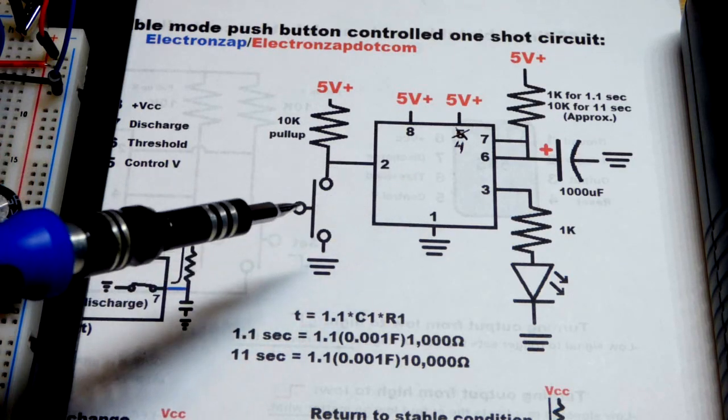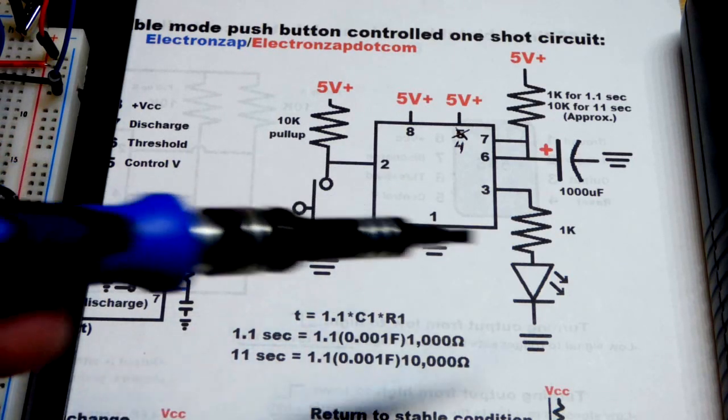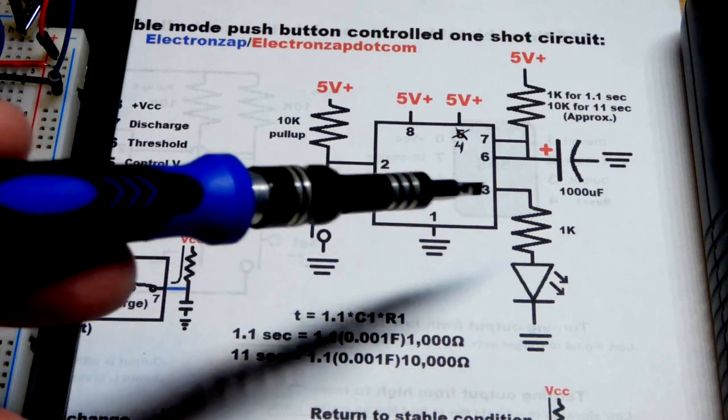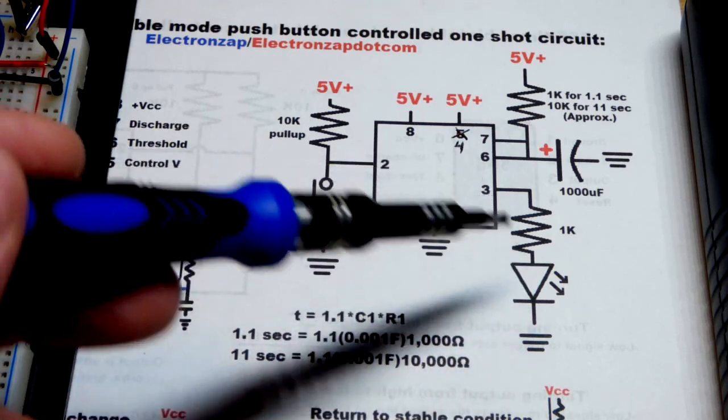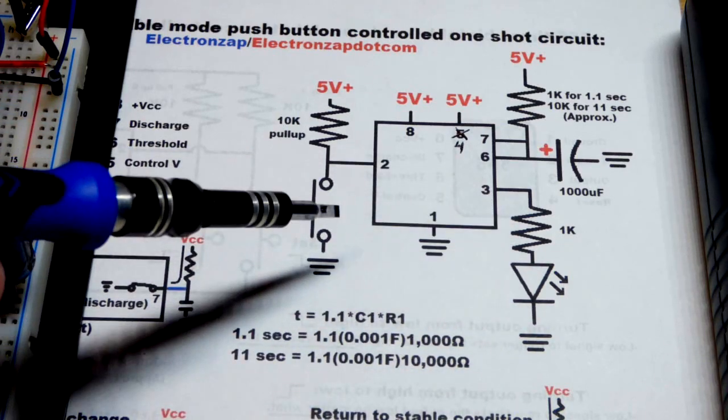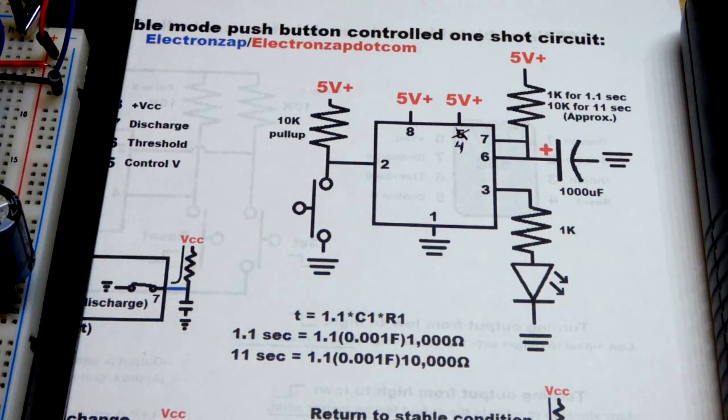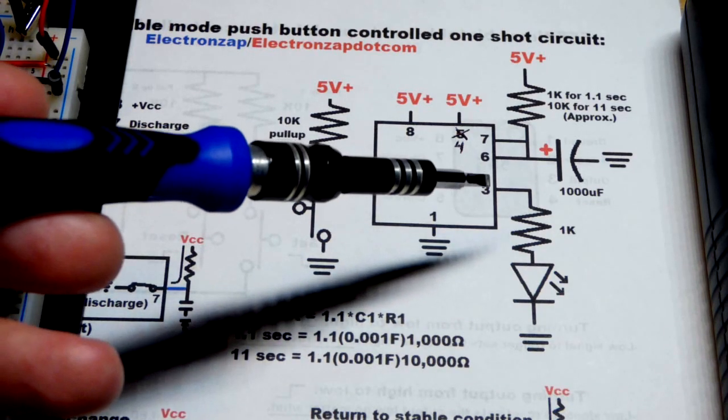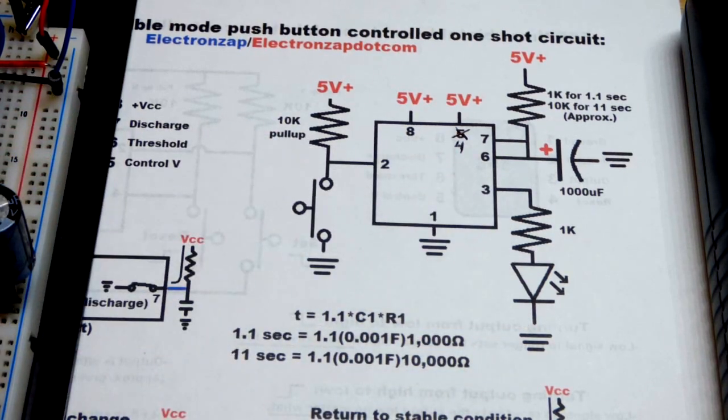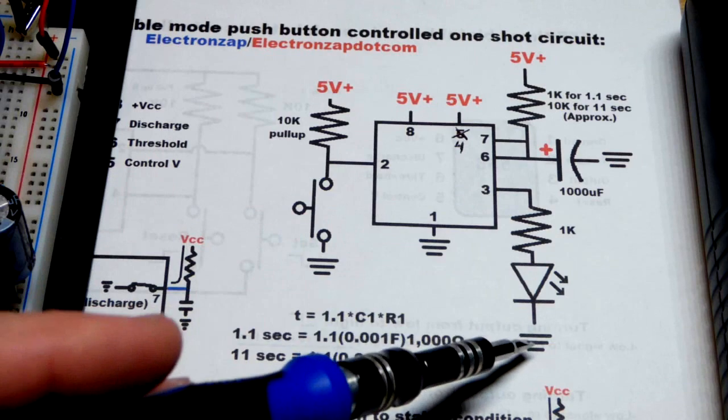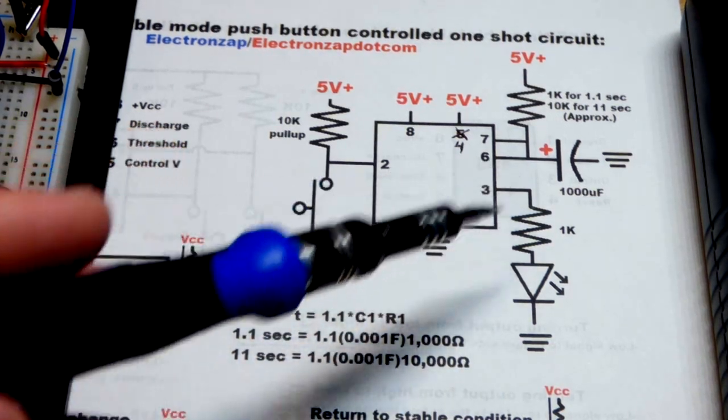But in any case, we're going to wire it up in monostable mode. And what that means is the output is going to be low. The LED is going to be off until we press this button here. We'll give a low signal to pin number two, and then we will have a high output. The stable part, though, is when the output is low. So when it's high, that is not stable.